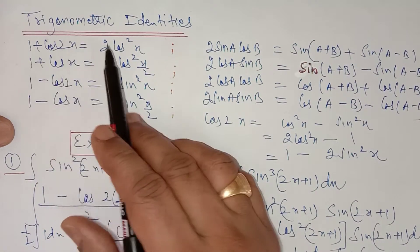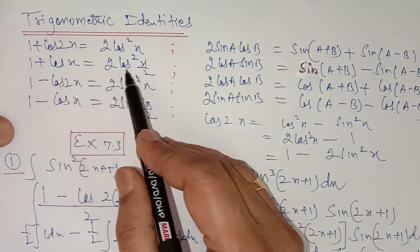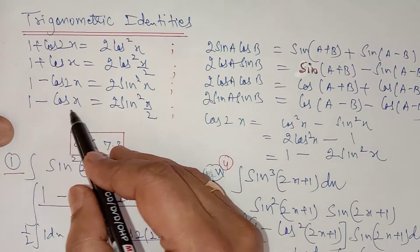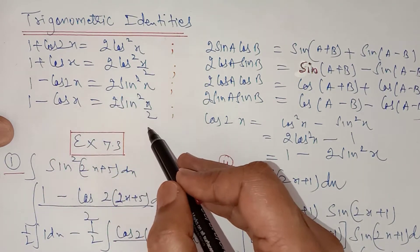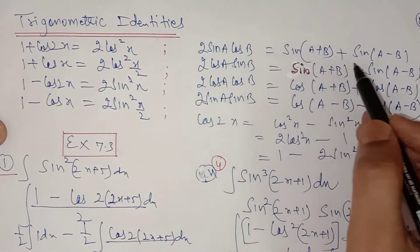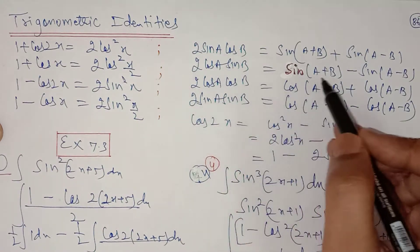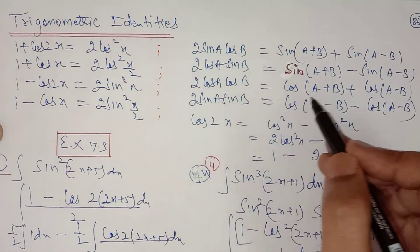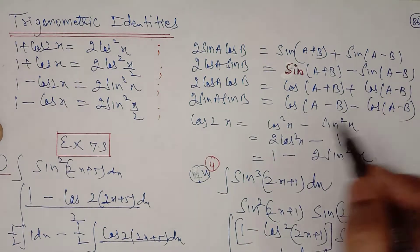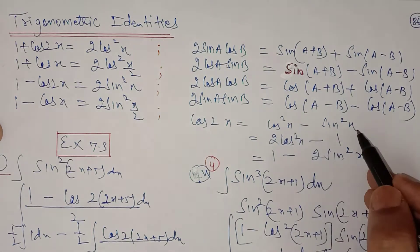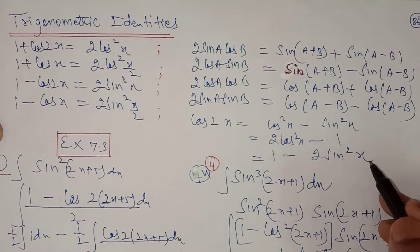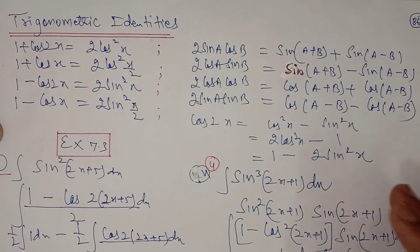You know that 1 + cos 2x = 2cos²x, and 1 + cos x = 2cos²(x/2). Also, 1 - cos 2x = 2sin²x and 1 - cos x = 2sin²(x/2). You must learn these identities carefully. Also: 2sinA cosB = sin(A+B) + sin(A-B); 2cosA sinB = sin(A+B) - sin(A-B); 2cosA cosB = cos(A+B) + cos(A-B); 2sinA sinB = cos(A-B) - cos(A+B). The cos 2x formula is cos²x - sin²x, or 2cos²x - 1, or 1 - 2sin²x, and also (1 - tan²x)/(1 + tan²x).